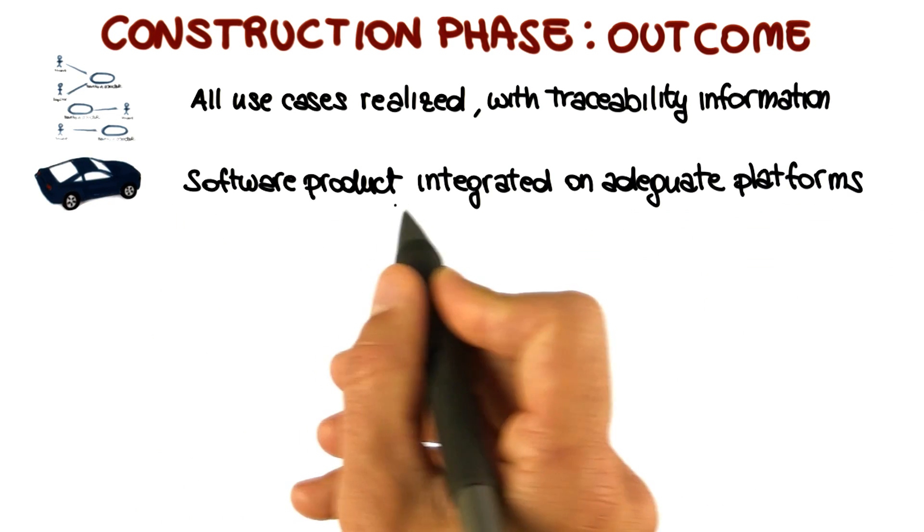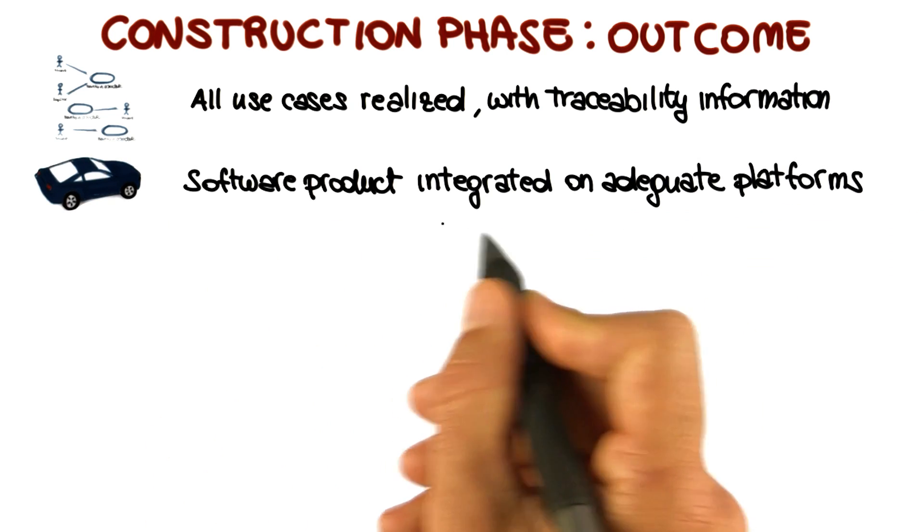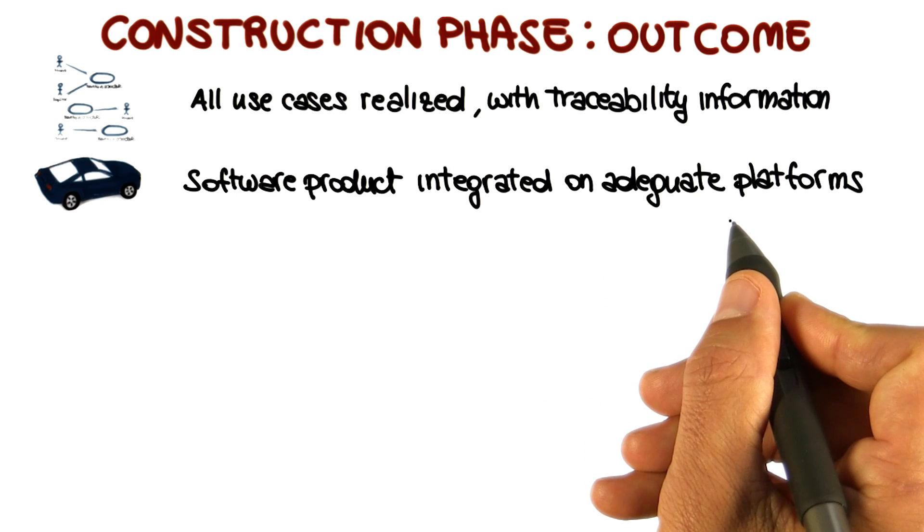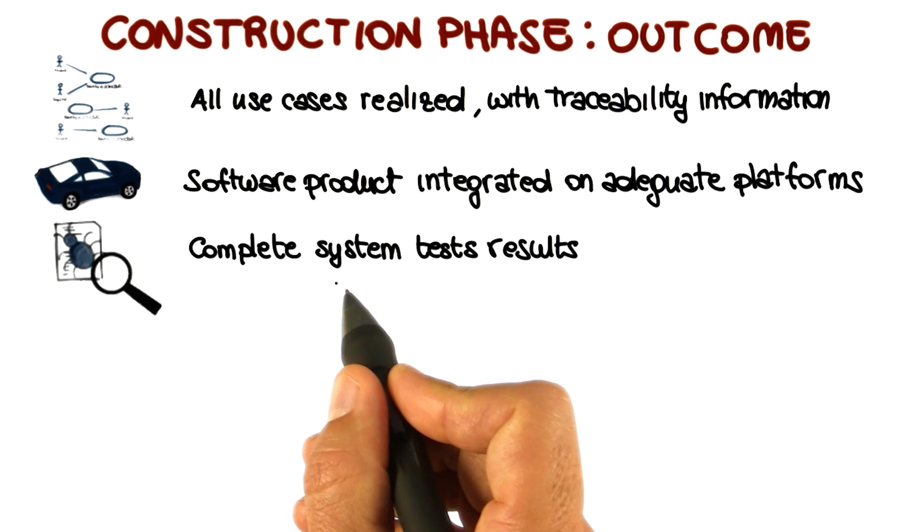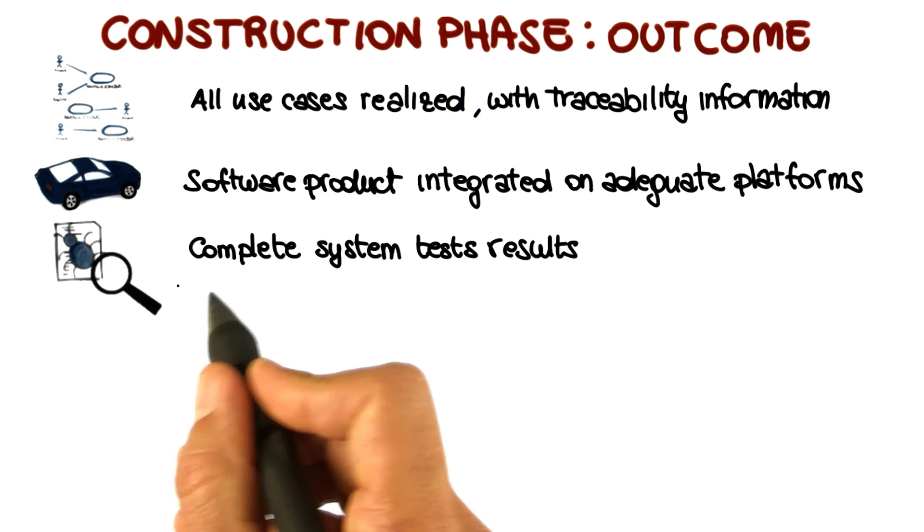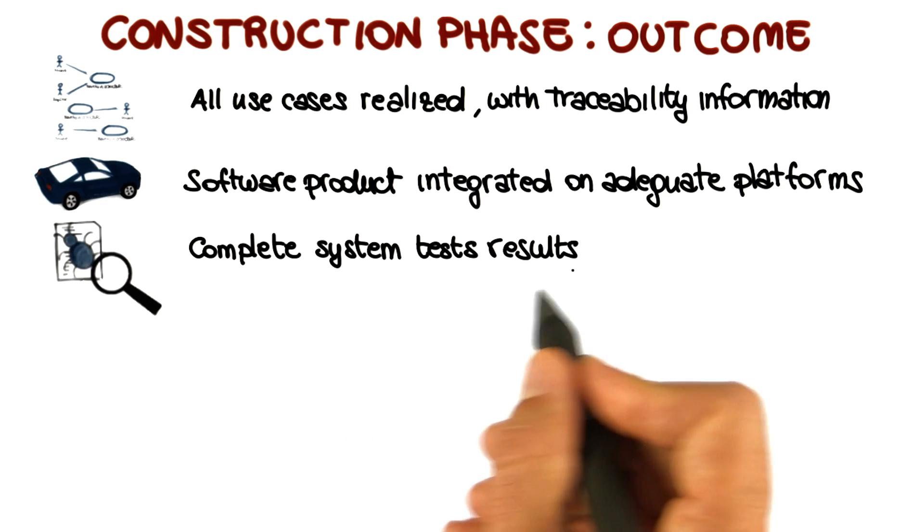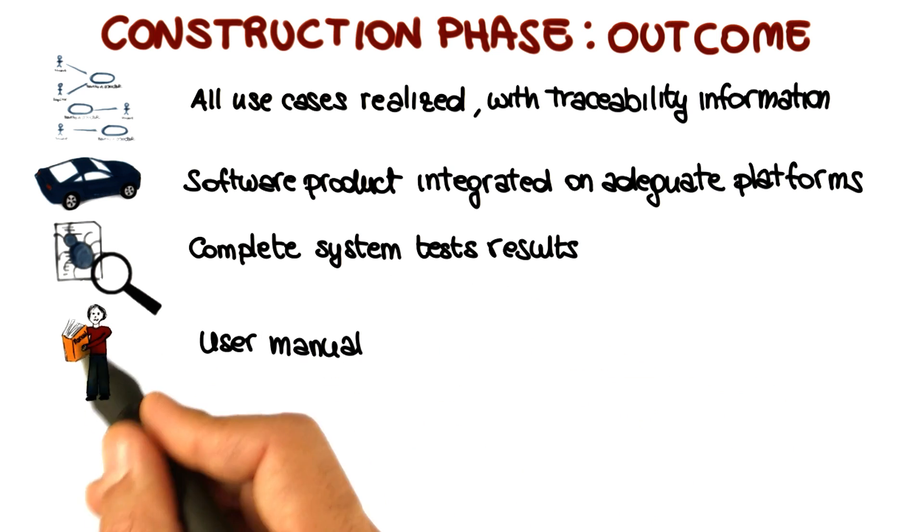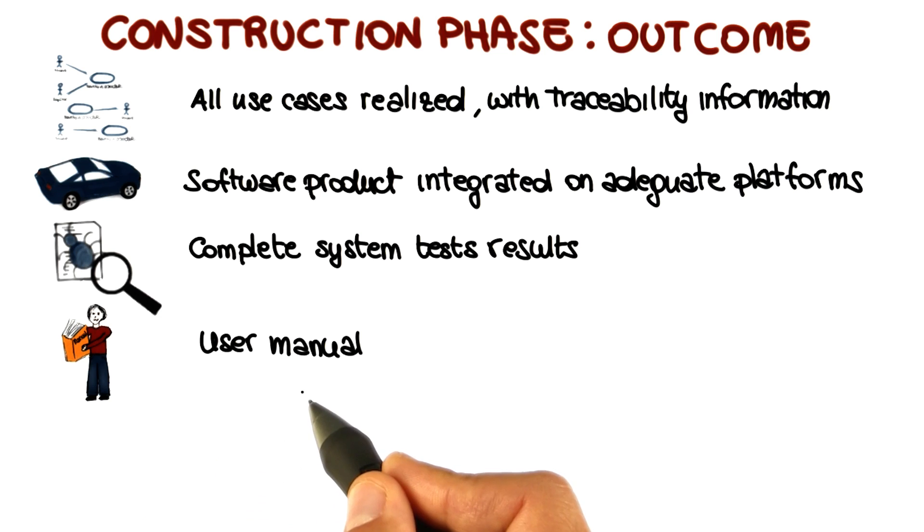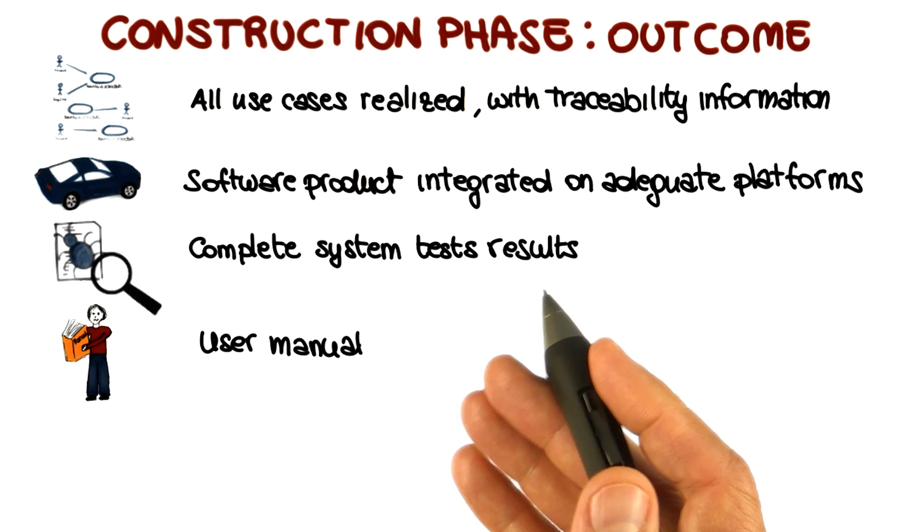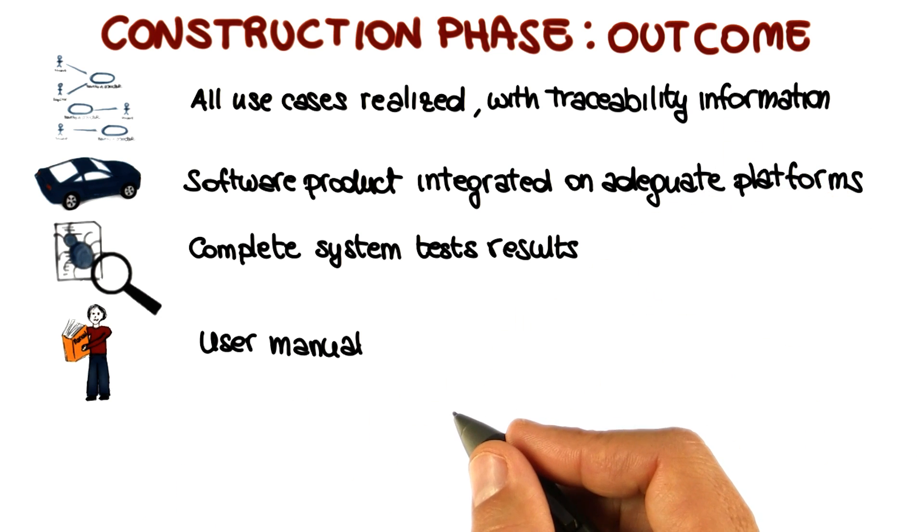As we were saying, we also have a complete software product here, which is integrated on all the needed platforms. Since the software product has to be thoroughly tested, we will also have a complete set of results for our tests. As part of this phase, we will also finalize the user manual, so we will have a user manual ready to be provided to the users.